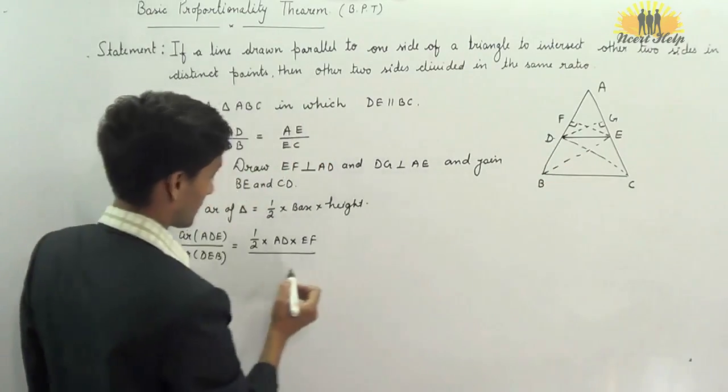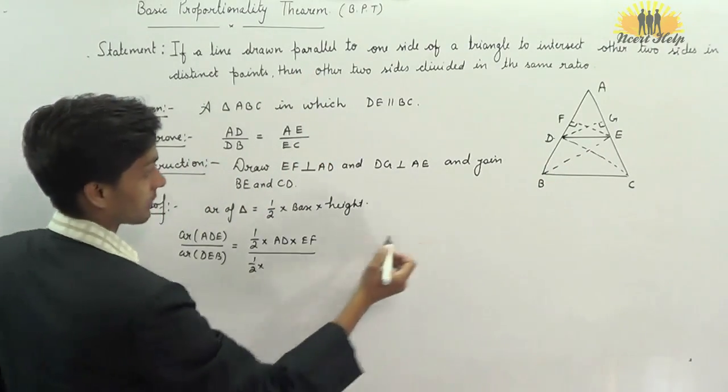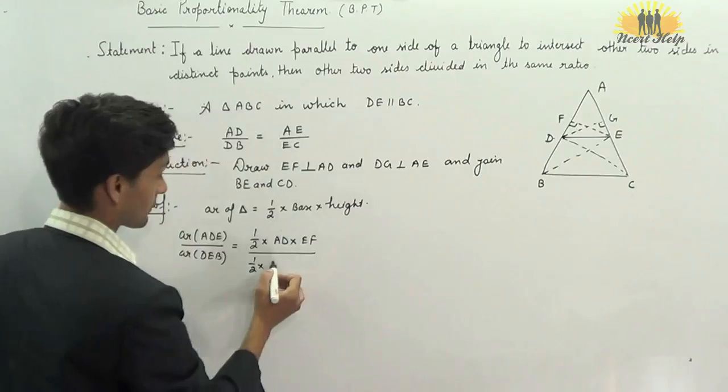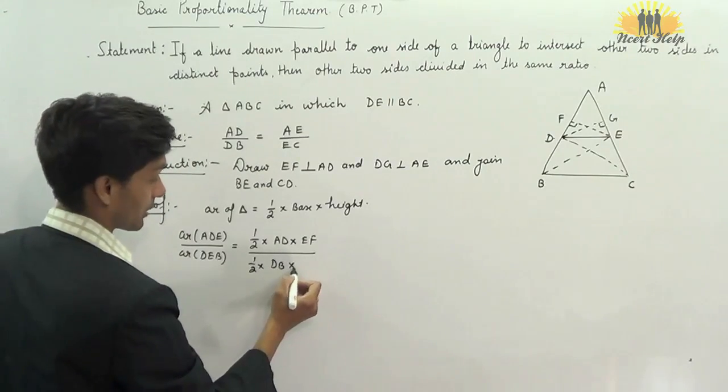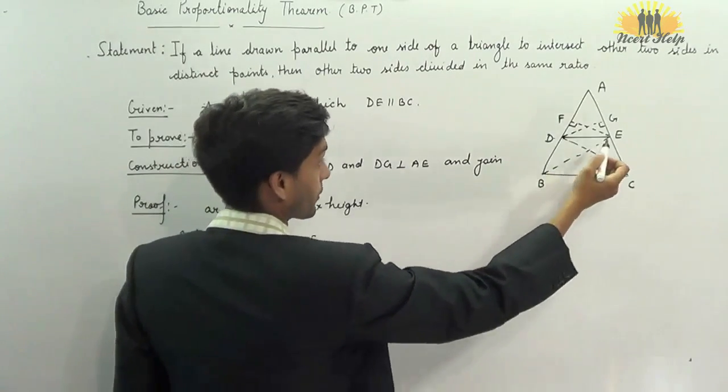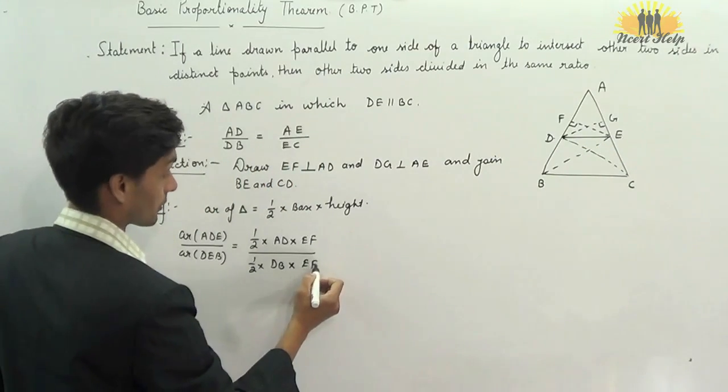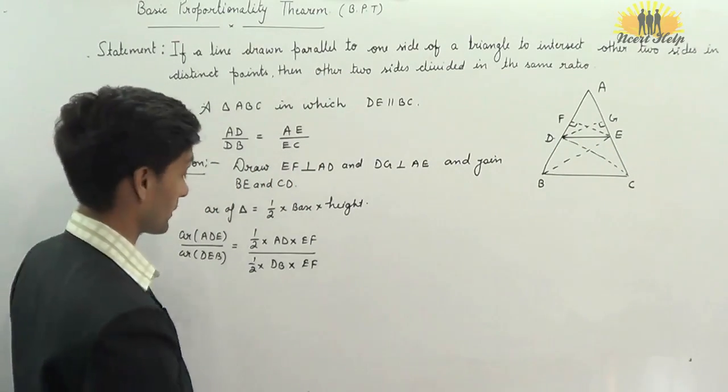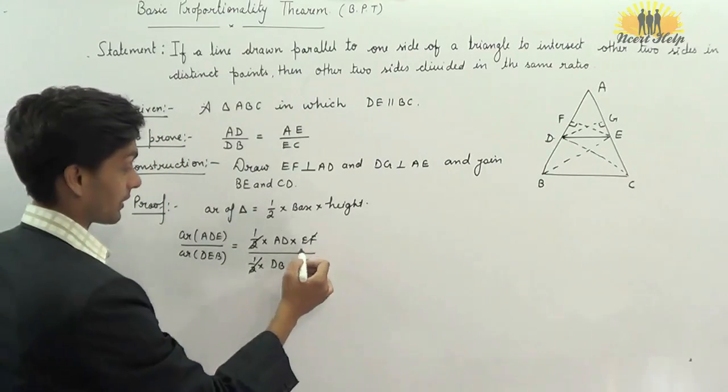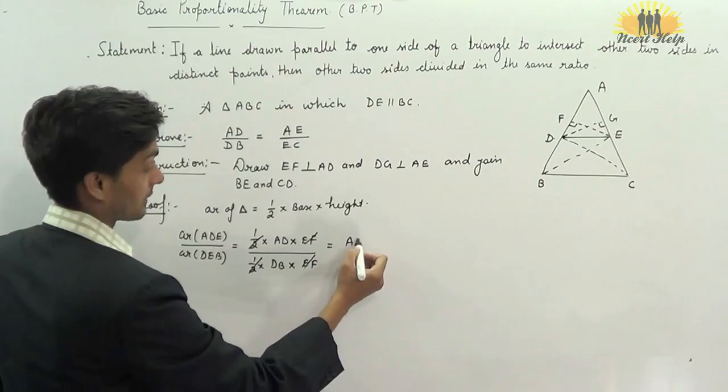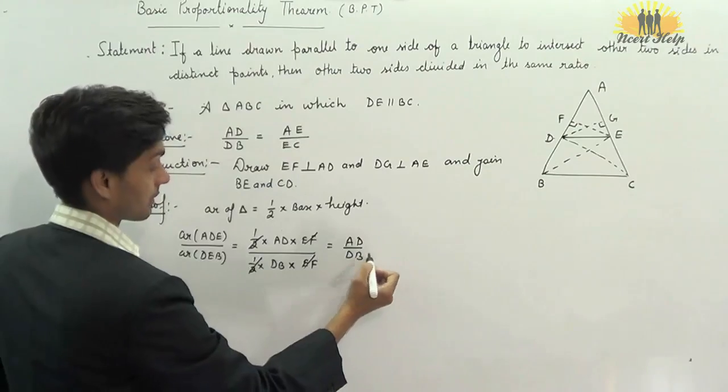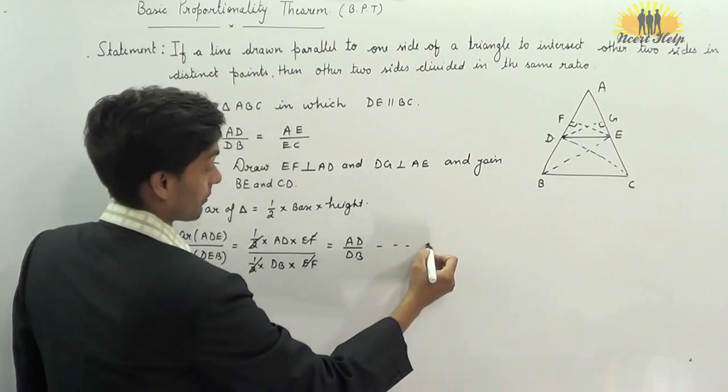We will use DB as base for DB. For DB, perpendicular will be drawn from vertex E. So, EF will be the perpendicular for the base DB of the triangle DEB. Canceling half and EF, we get AD by DB. That is equation number 1.